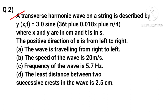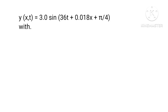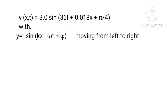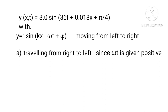A transverse harmonic wave on a string is described by y(x, t) = 3 sin(36t + 0.018x + π/4), where x and y are in centimeters and t is in seconds. The positive direction of x is from left to right. The options state: (a) the wave is traveling from right to left, (b) the speed of the wave is 20 m/s, (c) frequency is 5.73 Hz, (d) the least distance between two successive crests is 2.5 cm. Comparing with y = R sin(ωt + kx + φ), since ωt is positive, the wave is traveling from right to left — option (a) is true.